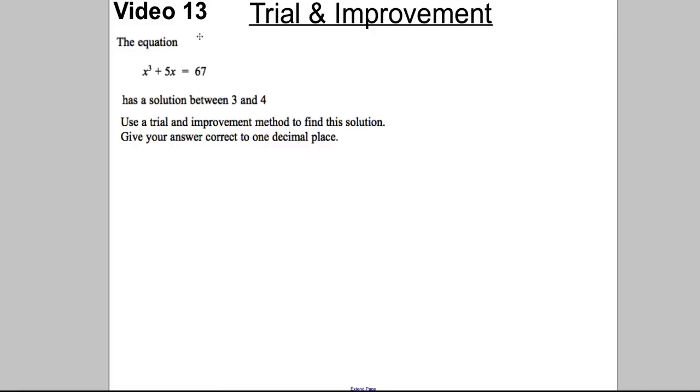The question looks like this. It says the equation, and we've got x³ + 5x = 67. It tells us an equation and it tells us what it's going to be equal to. It has a solution between 3 and 4. We're usually always told that. We're asked to use trial and improvement, so when you see trial and improvement, make sure you spot that it's this method going on. To find this solution, give your answer to one decimal place. There's a very specific way to answer these questions. It's the same every time, and I'll show you how to get the marks.